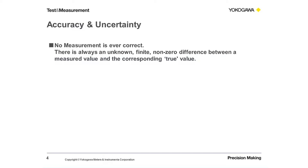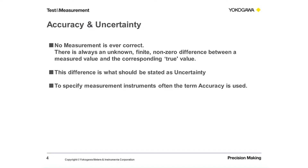No measurement is ever correct — that's why we need to specify the uncertainty. The uncertainty is an unknown, non-zero difference from the real value. However, when you look at measurement instruments, often the term 'accuracy' is used, which is more or less the inverse of uncertainty. If somebody specifies accuracy as 0.1%, that theoretically means it's 99.9% correct — which is not really a useful way to express it. So the best term when speaking about measurement is 'uncertainty.'